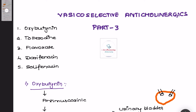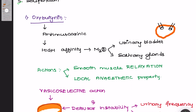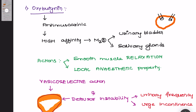Hello dear students, welcome back to my channel I Love Pharmacology. In this session we will move on to Part 3 of psychoselective anticholinergic drugs. To recapitulate, the drugs under psychoselective anticholinergic are oxybutynin, tolterodine, flavoxate, darifenacin, and solifenacin. First, we take up oxybutynin — it belongs to the antimuscarinic or anticholinergic class, and has high affinity towards the muscarinic receptor, especially the M3 receptor, which are present predominantly on the urinary bladder as well as the salivary gland.